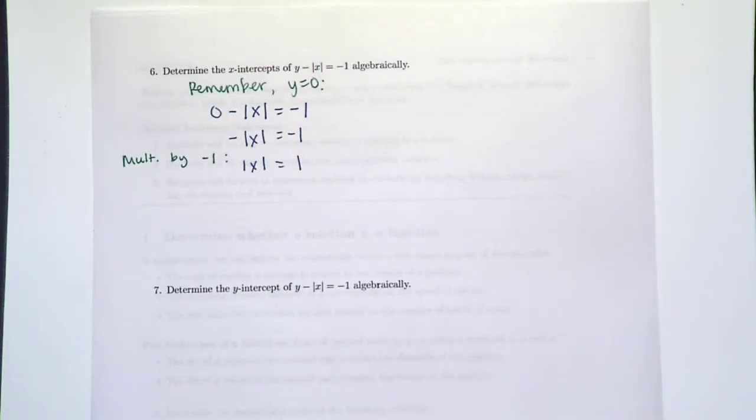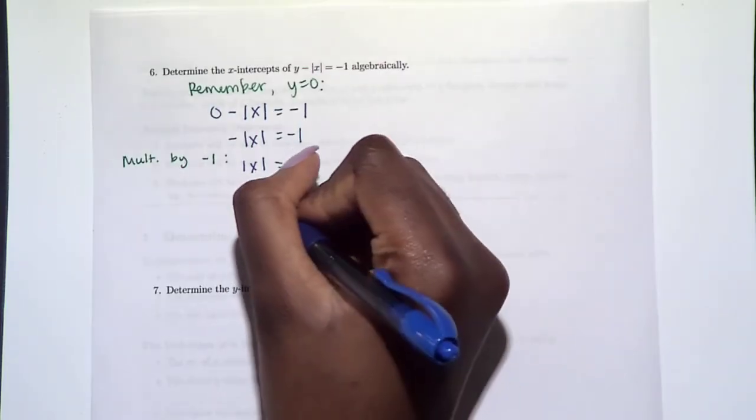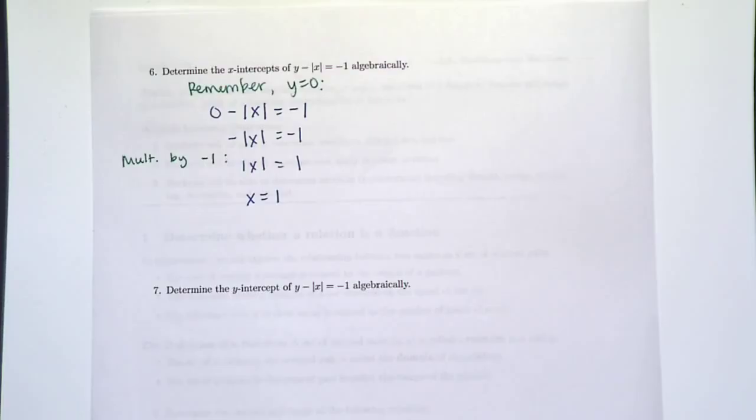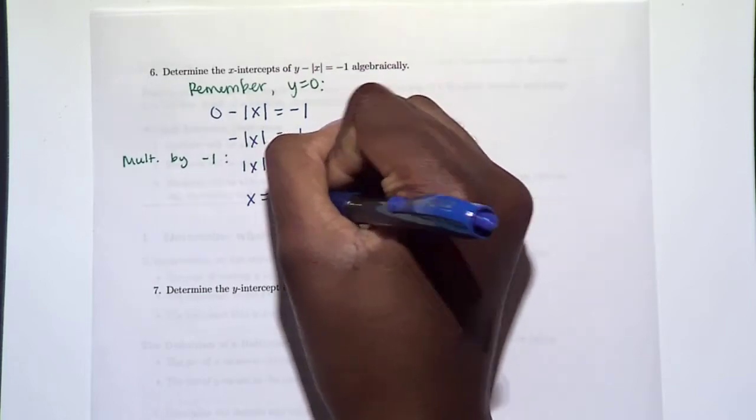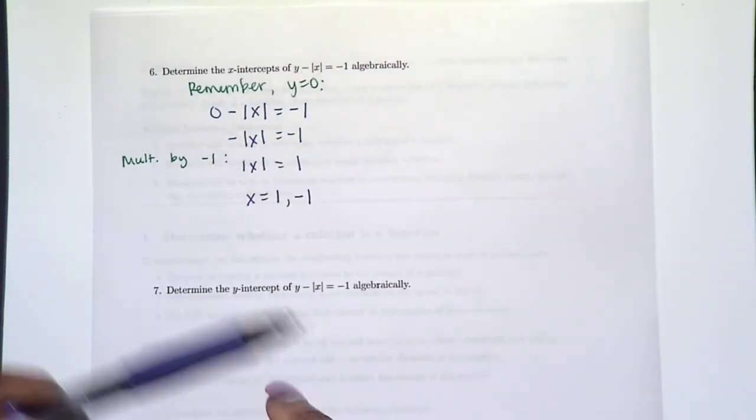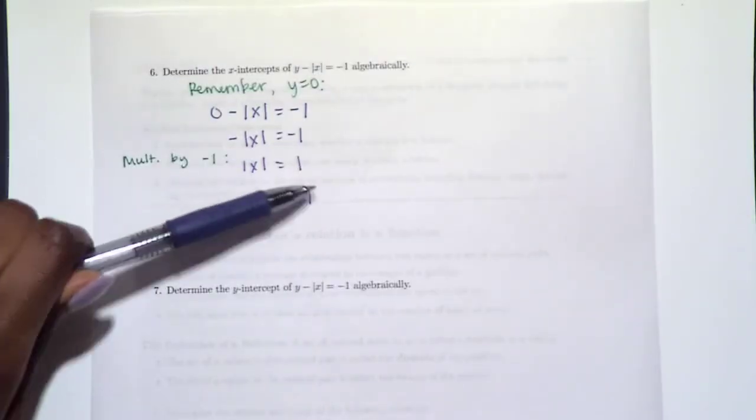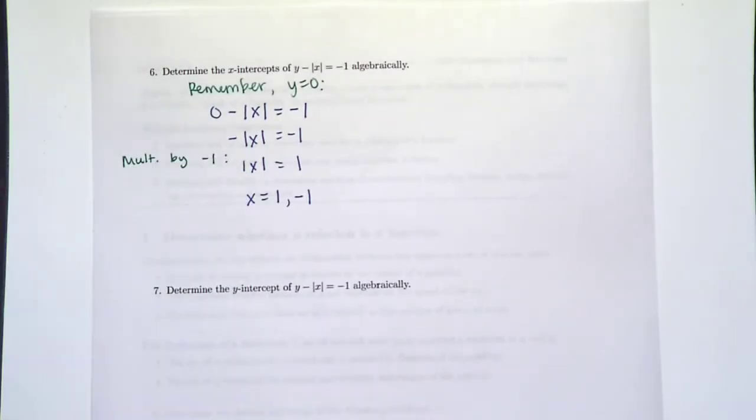So when you do that, you'll have |x| = 1. What values could x possibly be to make the absolute value of x equal one? Well, x could be 1, but we would still get the same answer if x were -1. So if we plug x = 1 here, it will equal 1. And if we plug in x = -1 here, we would also get positive 1 as well.